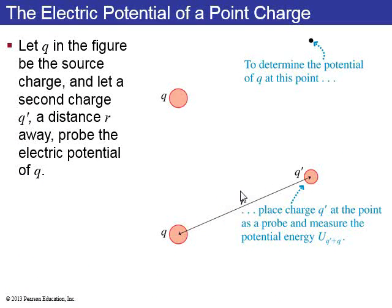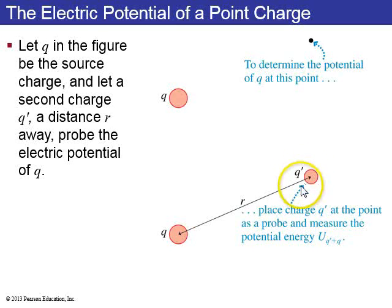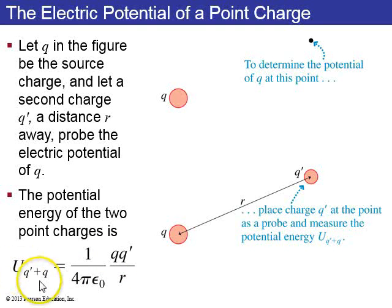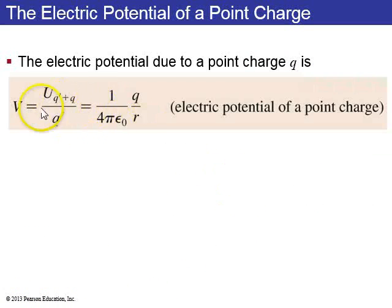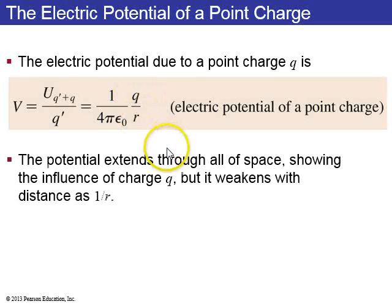Next, let's talk about a point charge. If you have a point charge Q, it creates an electric potential at some point. You measure it by placing a probe charge Q prime at that point. If it's at distance R from the source charge Q, the electric potential energy of the system is Coulomb's constant — 1 over 4 pi epsilon naught — times Q times Q prime over R. To get the electric potential, divide by Q prime. So the electric potential is Coulomb's constant times Q over R. The potential extends through all space but decreases as 1 over R.